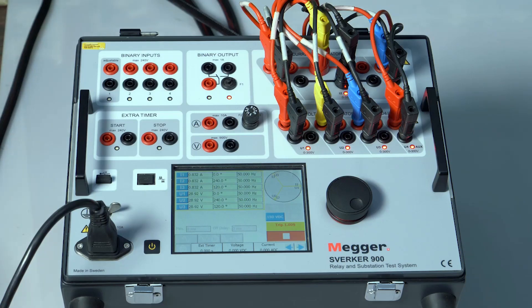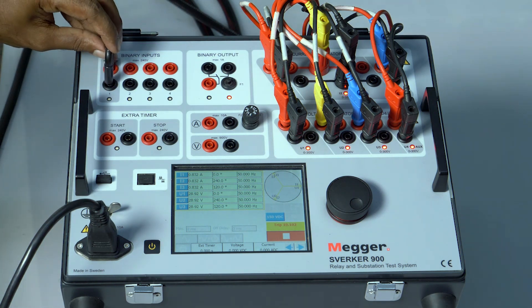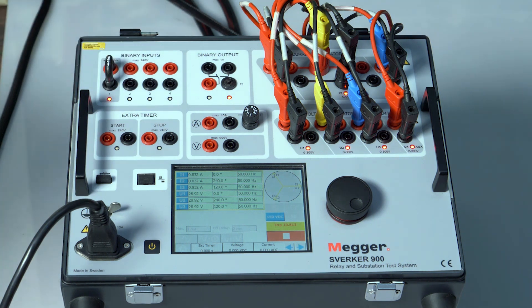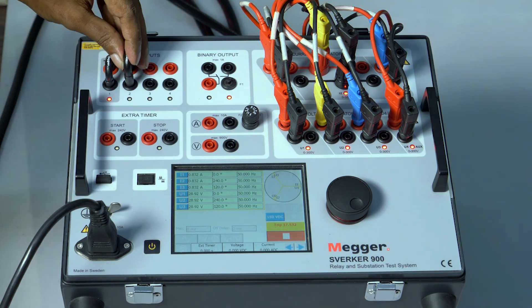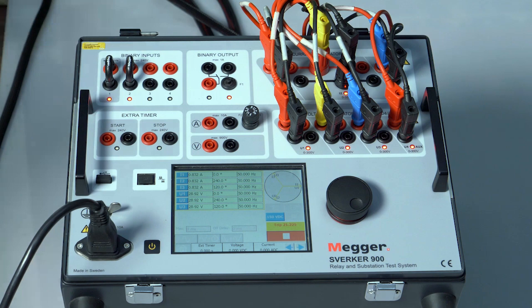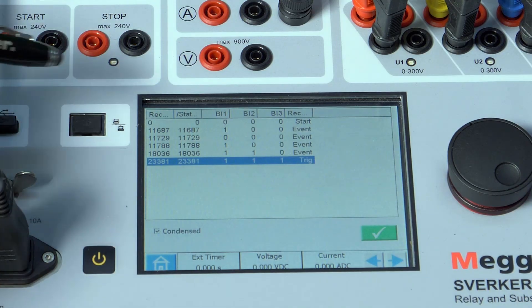You can see that the timing is running. Now I'm going to short the binary input 1 approximately at 11 seconds and binary input 2 at approximately 17 seconds and binary input 3. We can see that when all the three are shortened, it stopped injecting.